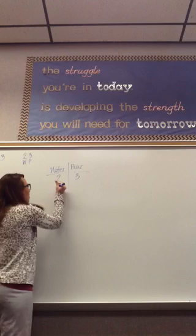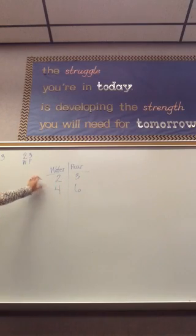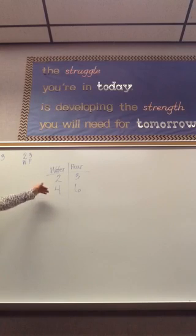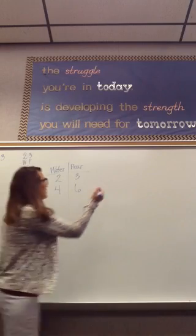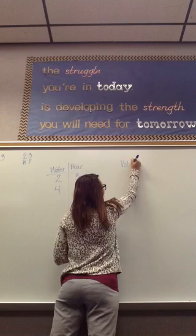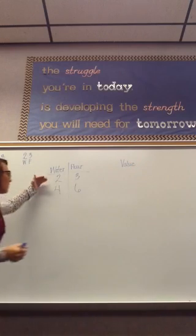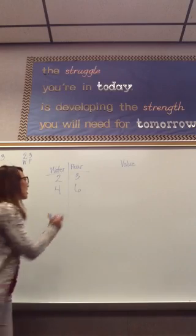Hopefully you were able to come up with 4 to 6. If you're not sure what other ratios are, or if the ratios you have are right, we can go back to one of our big ideas from the previous lesson. We know that all equivalent ratios have equal value. So if you find the value of the ratios, you can tell if they are equivalent or not.